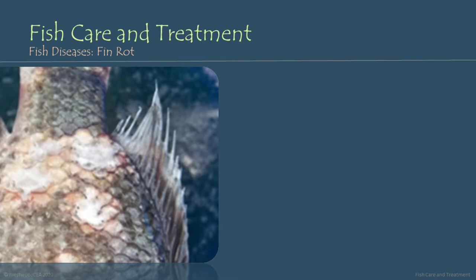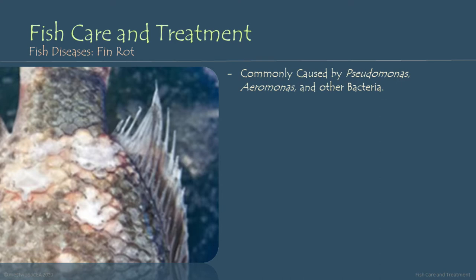The first disease that we're going to look at is fin rot. This is relatively common in aquaponic systems and in recirculating aquaculture systems. Not all of the diseases in this lecture are arranged from most common to least common, but this one's pretty common, and if you're growing things like tilapia, which are a pretty aggressive fish, you're probably going to see fin rot at some point during the operation of your aquaponic systems. Fin rot is commonly caused by Pseudomonas, Aeromonas, and other similar bacteria. Fin rot often starts out as a whitening, almost cottony appearance along the edges of the fins and the outer edge of the tail.